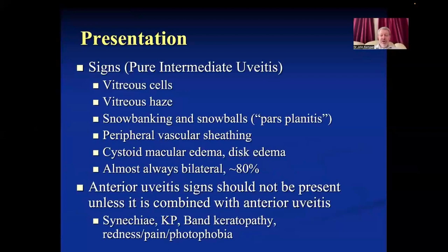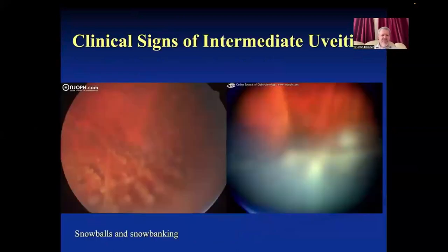The signs for pure intermediate uveitis are primarily vitreous inflammation: vitreous cells, haze, snowballs, snowbanking, and peripheral vascular sheathing. Cystoid macular edema and disc edema commonly occur, though viewed as complications. This is almost always bilateral, about 80% of cases, and anterior uveitis signs should not be present other than a few cells spilling over from the vitreous.